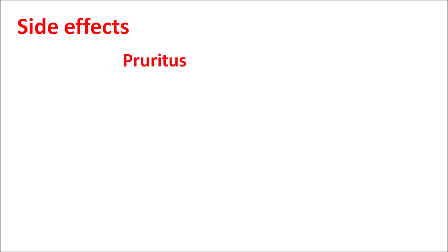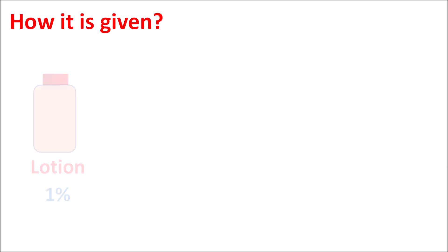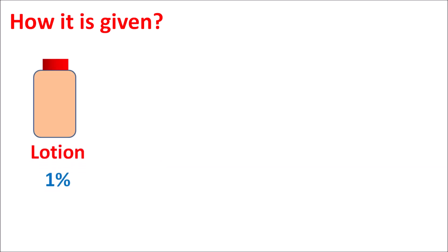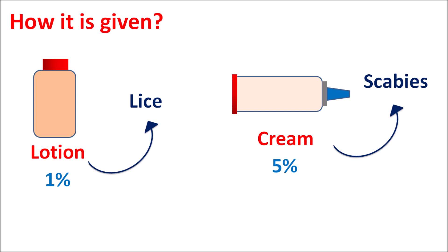Permethrin produces local side effects: it can produce pruritus, local irritation, erythema, skin rashes, and some numbness and tingling sensation. This drug is available as a lotion, particularly at 1% solution, which is used for the treatment of lice. It is also available as a cream at a strength of 5%, which is particularly used for the treatment of scabies.